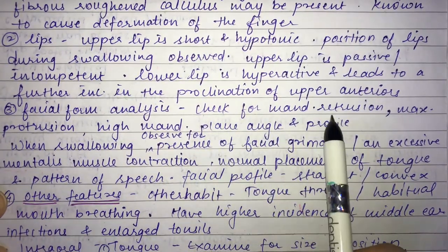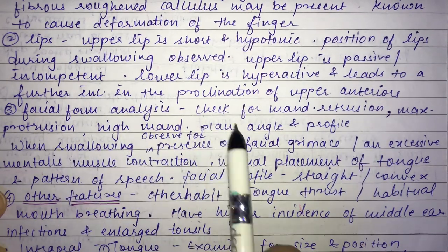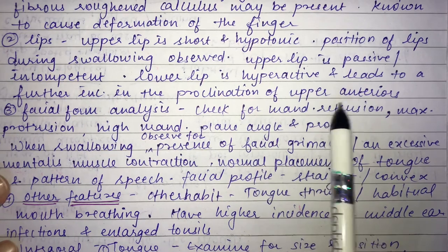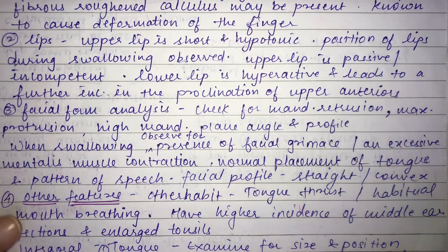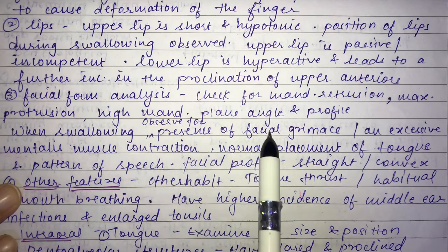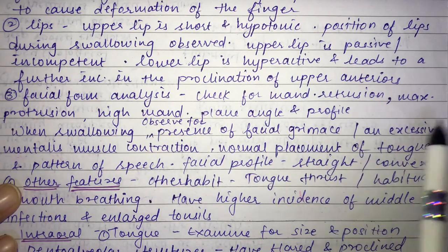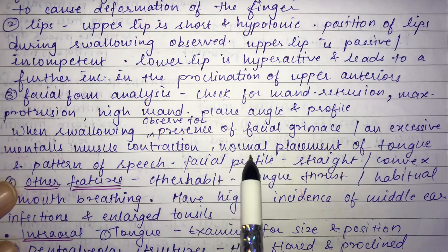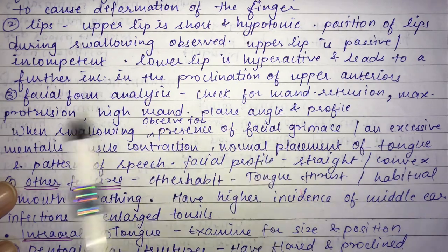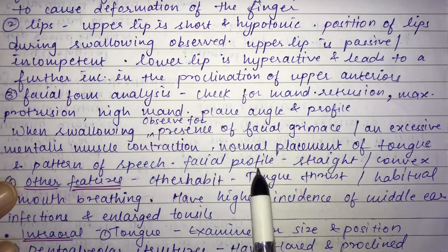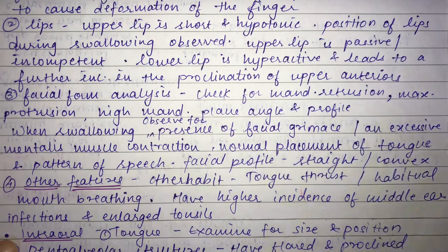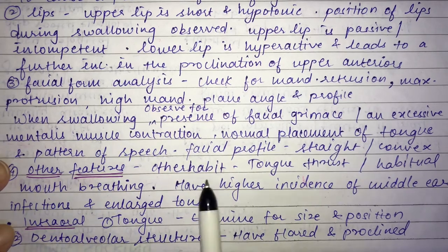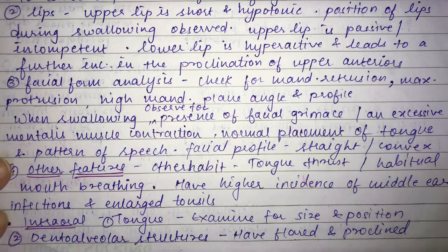During swallowing, observe for facial grimace or excessive mentalis muscle contraction. Normal tongue placement and speech pattern are also assessed. The facial profile may be straight or convex. Thumb sucking is also associated with other habits like tongue thrust and habitual mouth breathing. These patients have a higher incidence of middle ear infections and enlarged adenoids.